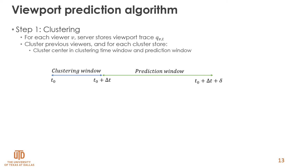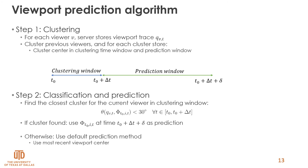We also define the prediction window, and the center of each cluster is stored for the prediction window as well. In the prediction step, we find the closest cluster for the current viewer in the clustering window. If the viewer's viewport samples are within 30 degrees of a cluster center for the duration of the clustering interval, that cluster is selected as the match. If a cluster is found, we use the center of that cluster for prediction. Otherwise, if no cluster is found, we use a fallback method based on the individual user's viewport pattern — specifically, we use the most recent viewport sample as the fallback.